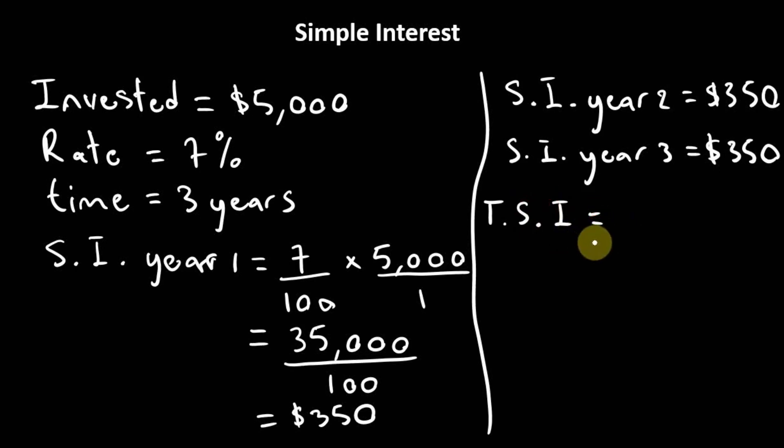So remember, multiplication is just repeated addition. So we can just multiply three times 350 and three times 350 will give us $1,050.